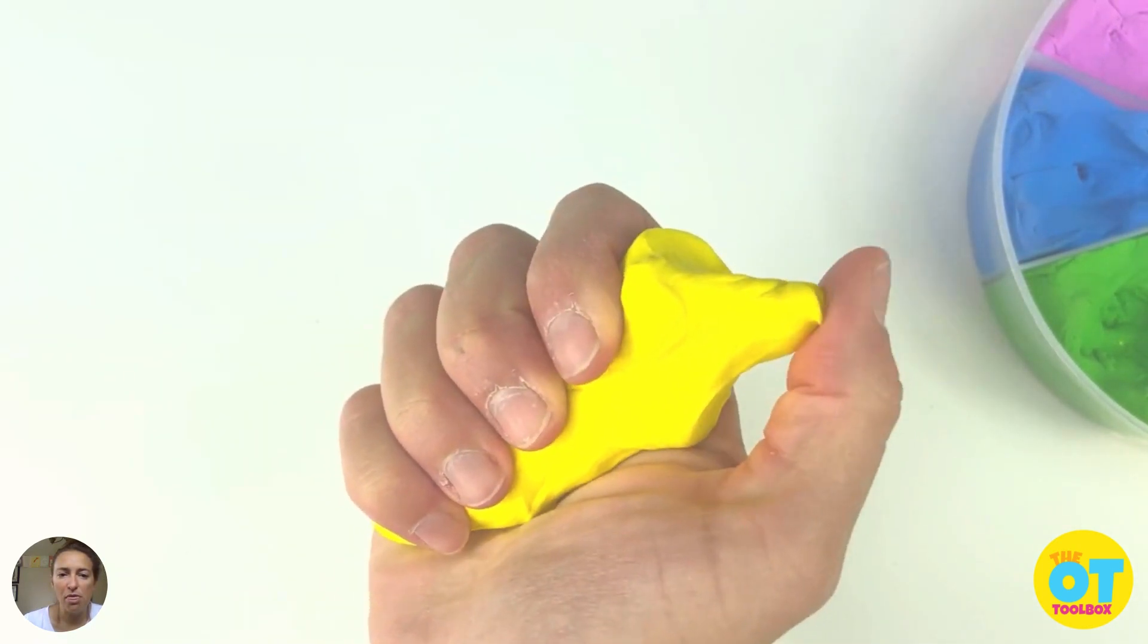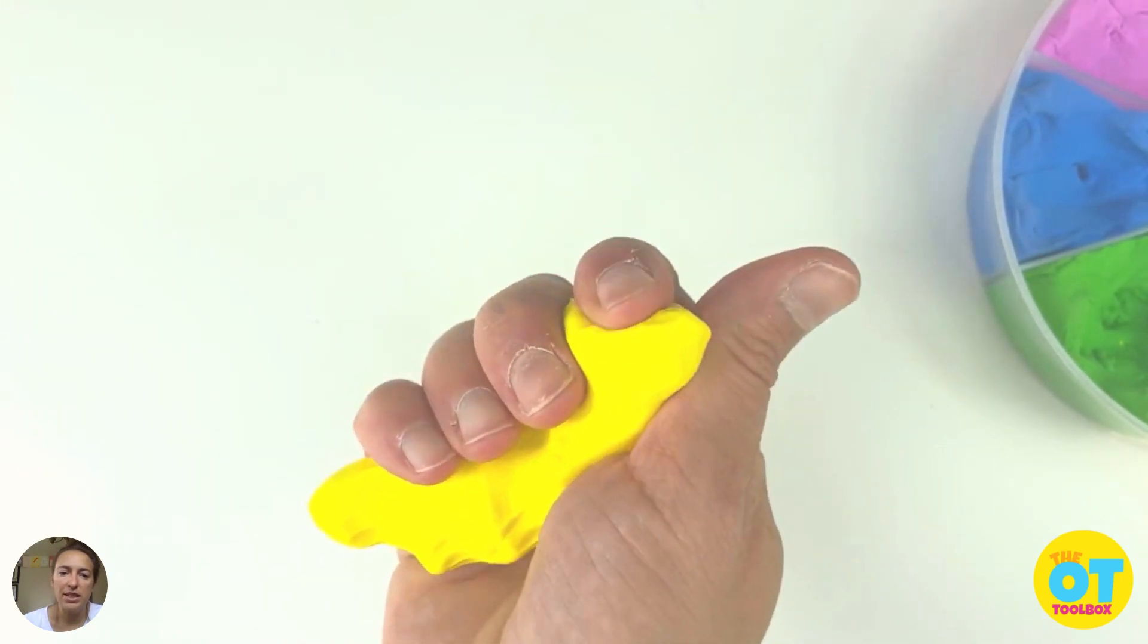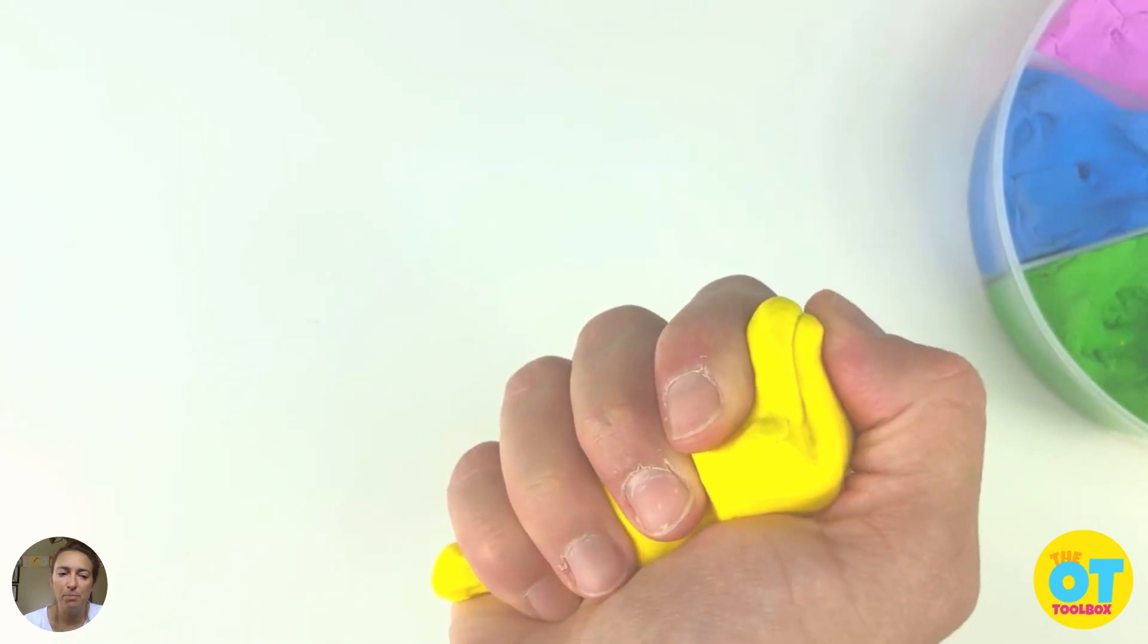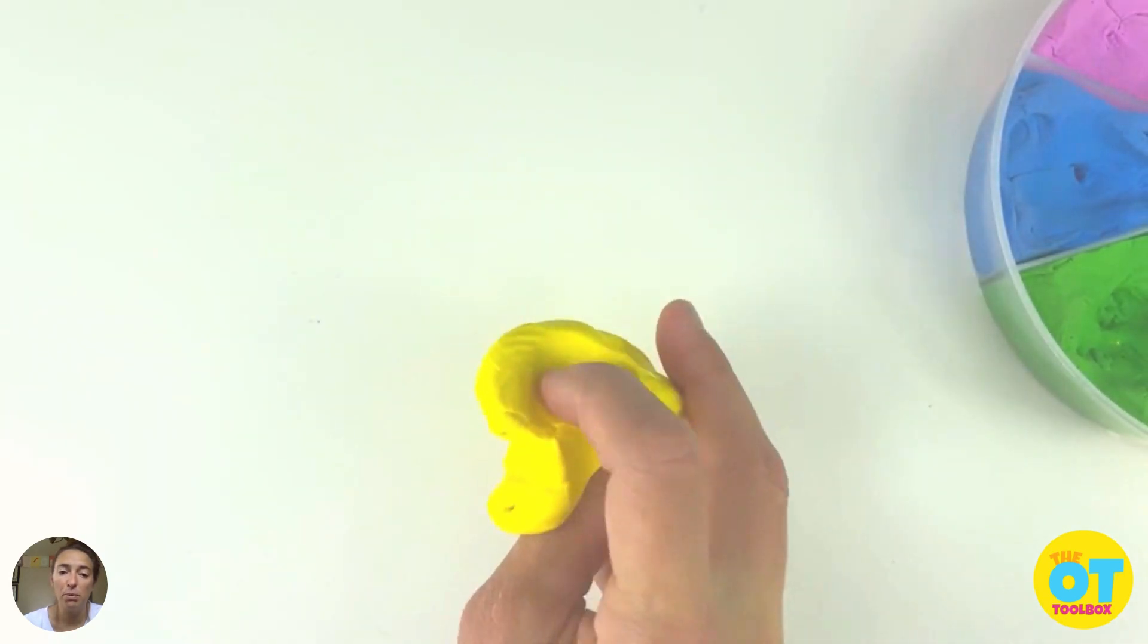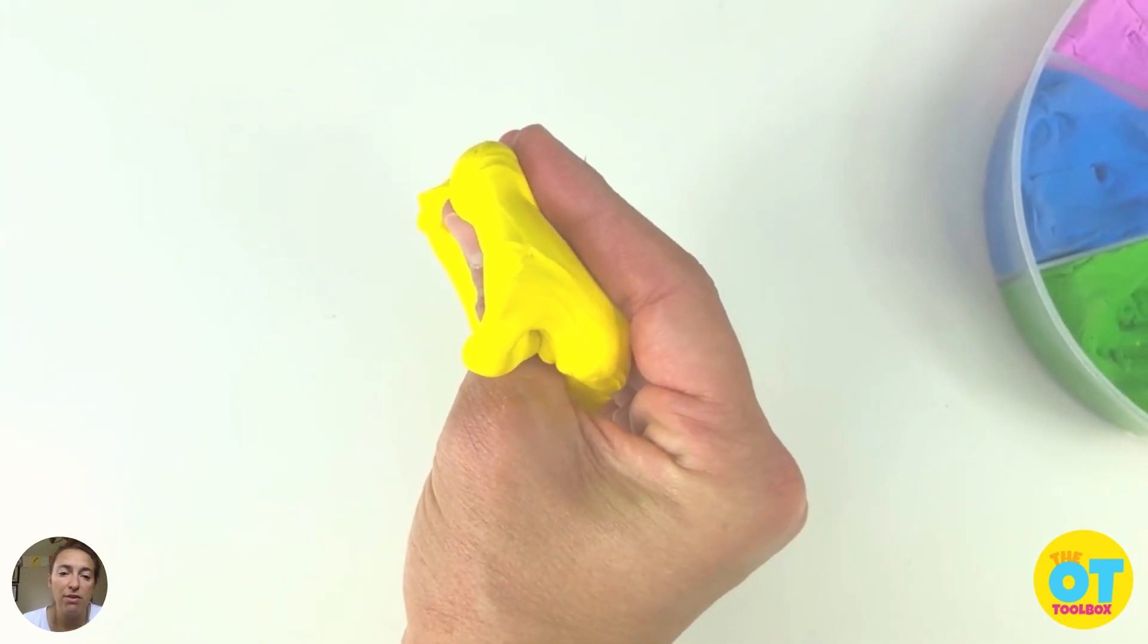Next, we're working on that thumb stability, working on just pressing that thumb down into the end of the Play-Doh. This is another great way to work on open thumb web space because you're isolating that distal joint of the thumb.